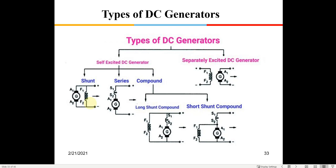If the residual magnetism in the core is lost — for example due to a discharge — the generator may not build up voltage on its own even when driven by the engine. In this case, a small external current must be injected into the field coil, known as 'flashing the field coil,' to restore residual magnetism and allow the voltage to build up.